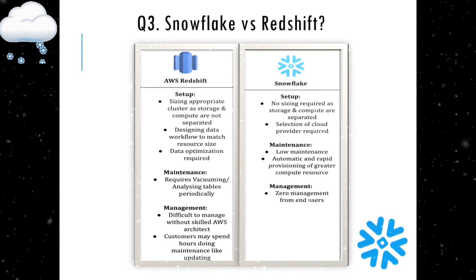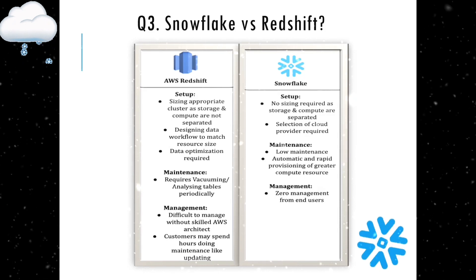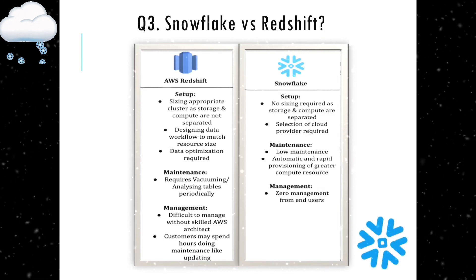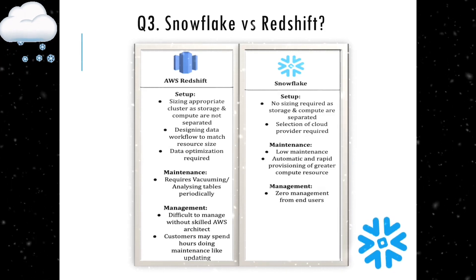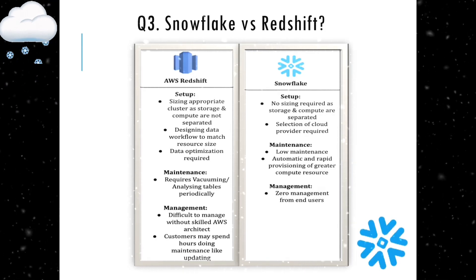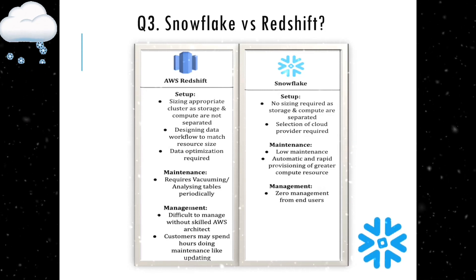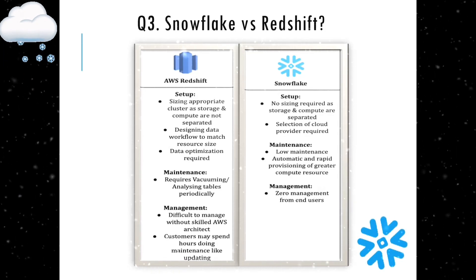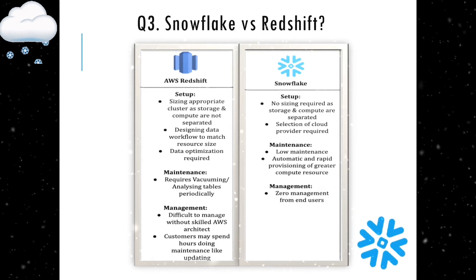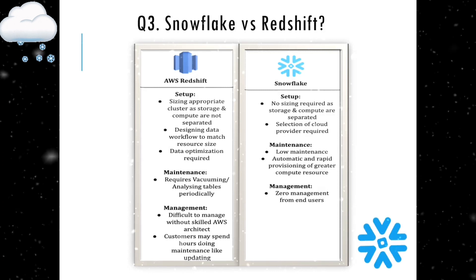With Snowflake, you need to select a cloud provider — AWS, Azure, or GCP. With Redshift, AWS is already providing it. Redshift requires designing data workflows to match resource size and data optimization, while Snowflake automatically optimizes data so that is not required. Management-wise, Redshift is more difficult if you lack AWS architecture knowledge, while Snowflake is easier to learn and manage. Redshift also requires customers to spend time on maintenance like updates and patching, which is not required with Snowflake.